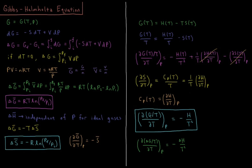This is true for a Gibbs energy and is also going to be true for various sums and combinations of Gibbs energies. So what will be most useful is the partial derivative of delta G over T with respect to T equals minus delta H over T squared. This will allow us to figure out how the equilibrium constant of a reaction changes as the temperature changes.